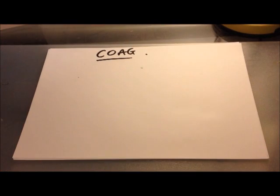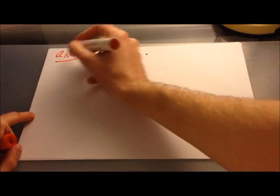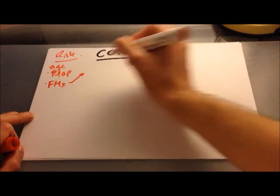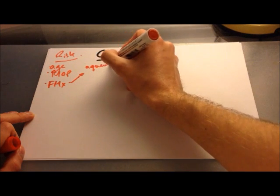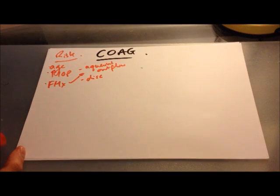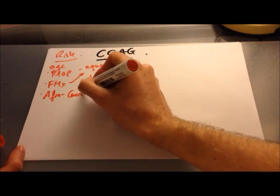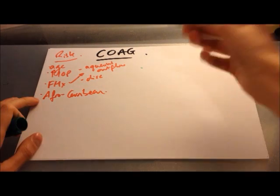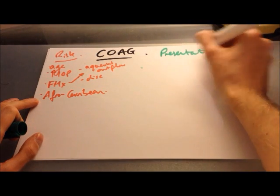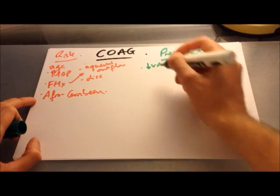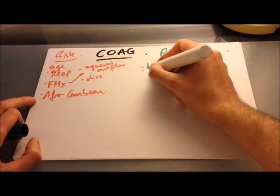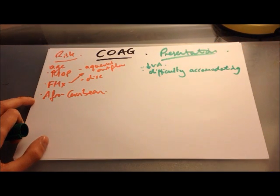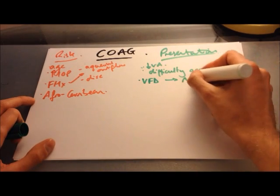Risk factors for open-angle glaucoma include increasing age, raised intraocular pressure, family history (which influences aqueous outflow, disc morphology, and intraocular pressure — with a 22% risk if a first-degree relative is affected), and being Afro-Caribbean, which is associated with more frequent and more severe disease. The condition is often asymptomatic and picked up incidentally by optometrists. Patients may present with reduced visual acuity or difficulty with accommodation, as raised intraocular pressure affects the ciliary muscles.